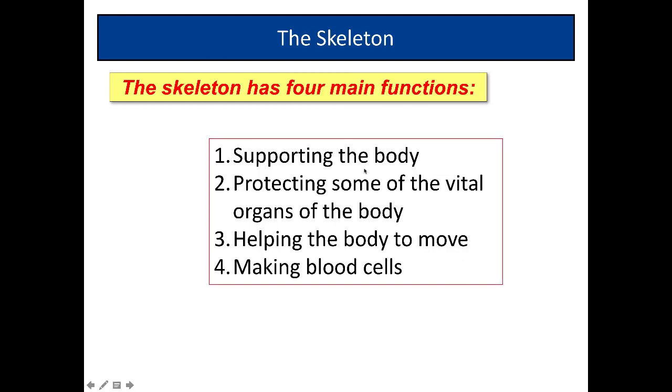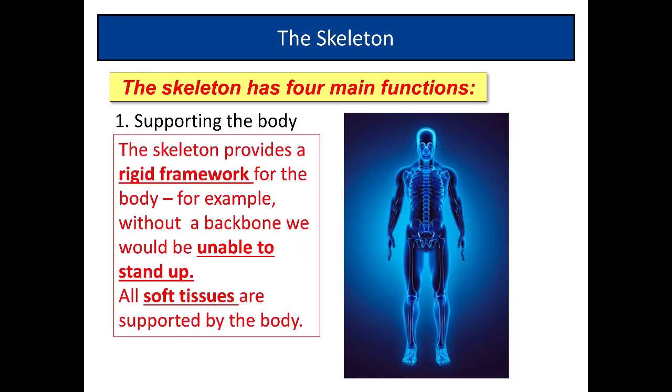The skeleton has actually got four main functions. First of all, supporting the body. Secondly, protecting some of the vital organs of the body. Thirdly, helping the body to move. And fourthly, making blood cells. Let's look at each one of those in turn. Firstly, the skeleton supports the body. The skeleton provides a rigid framework for the body. It's as though the muscles and organs were put onto scaffolding, if you like. The skeleton is like a scaffold that holds the body upright. For example, without a backbone, we wouldn't be able to stand up. All soft tissues, muscles and organs are supported by the body.